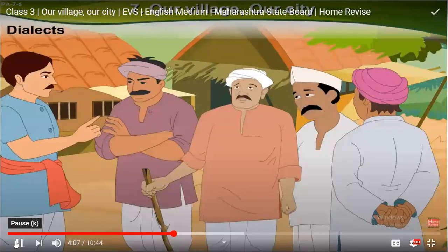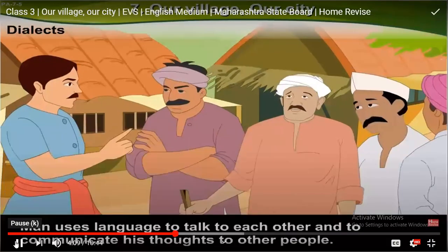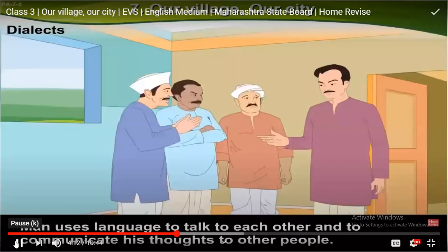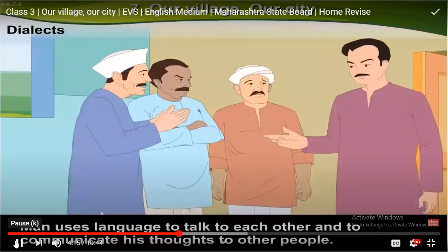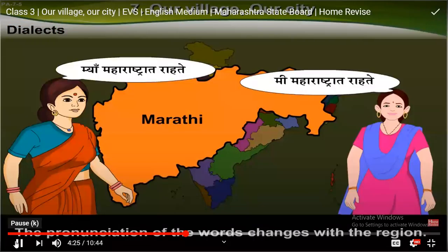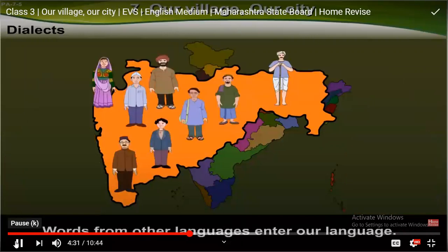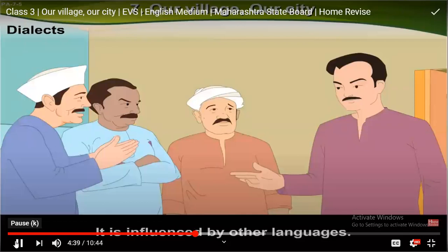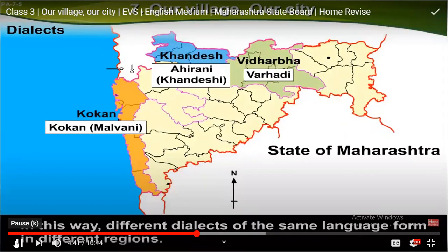Dialects: man uses language to talk to each other and to communicate his thoughts to other people. The same language is spoken in different ways in different regions. The pronunciation of words changes with the region, and words from other languages enter the language — it is influenced by other languages. In this way, different dialects of the same language form in different regions.